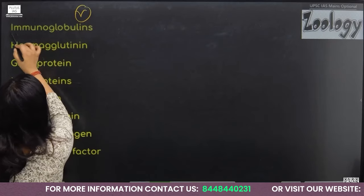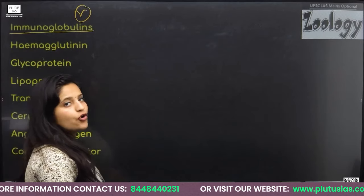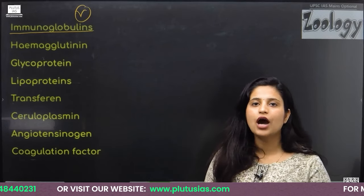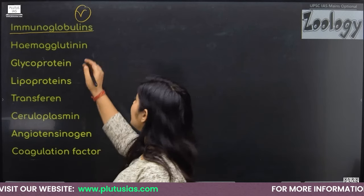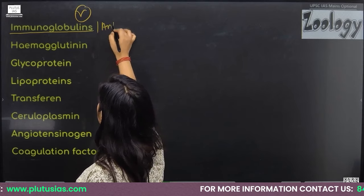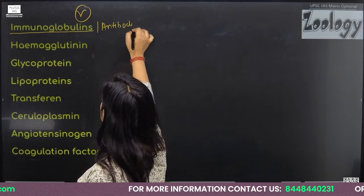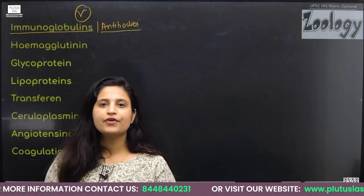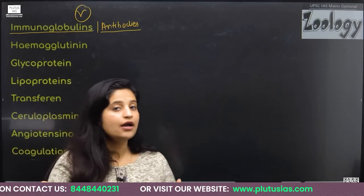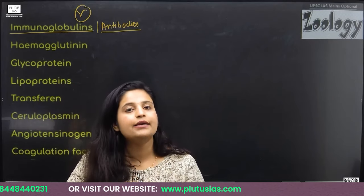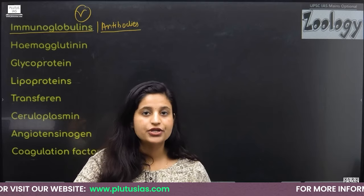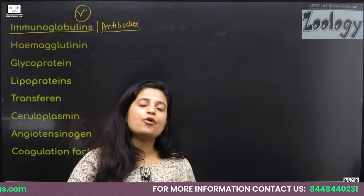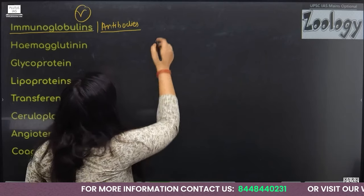Gamma globulin function: immunoglobulins are a type of gamma globulin that produce antibodies. Whenever we have any pathogen infection, immunoglobulins make antibodies against the pathogen, providing humoral immunity.